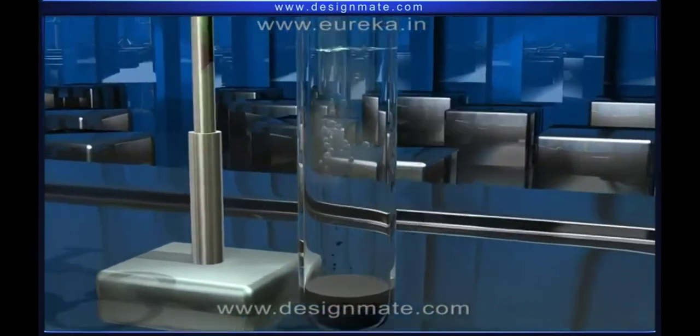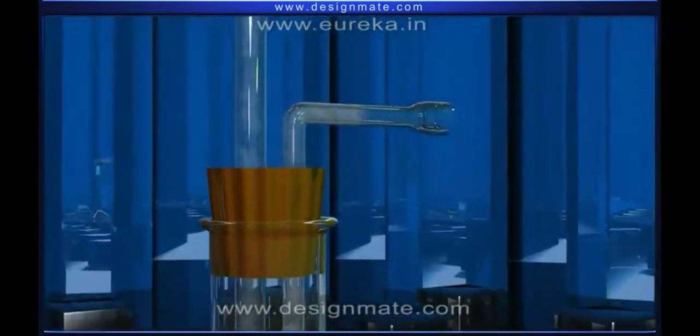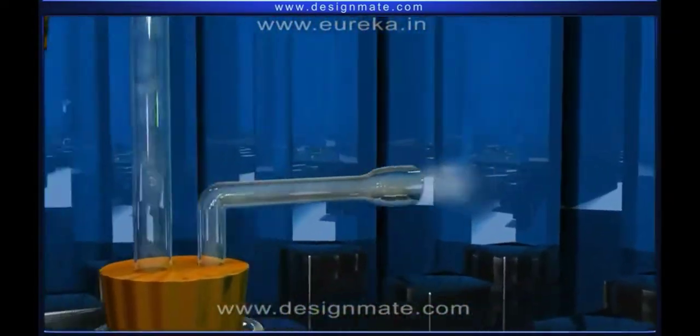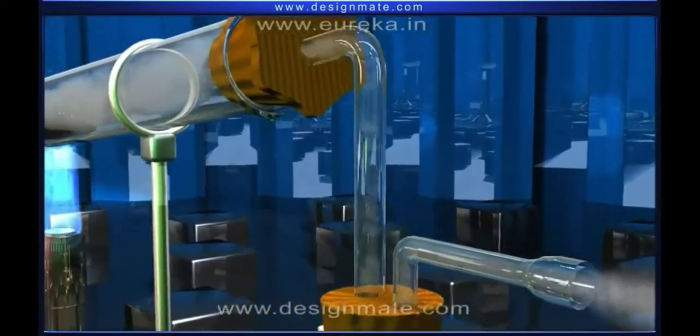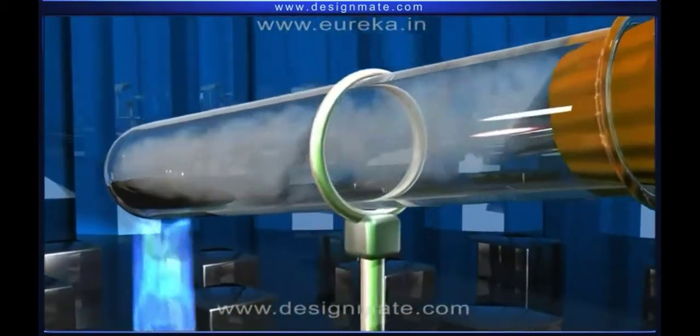The unreacted vapors are released through the outlet of this tube called coal gas which is combustible. The material left behind in the horizontal tube is called coke.